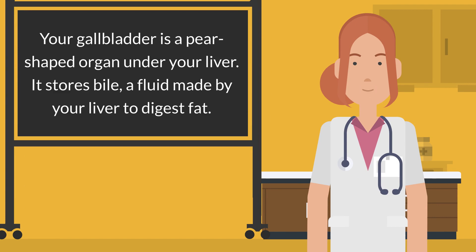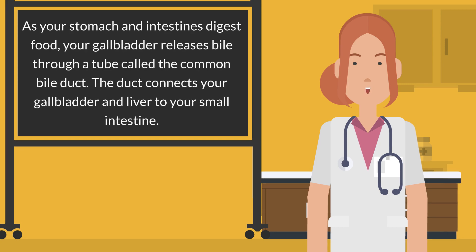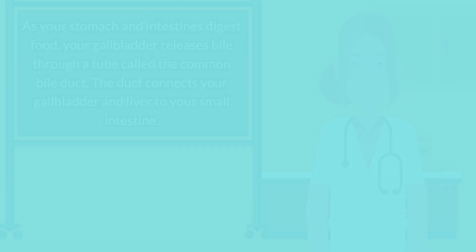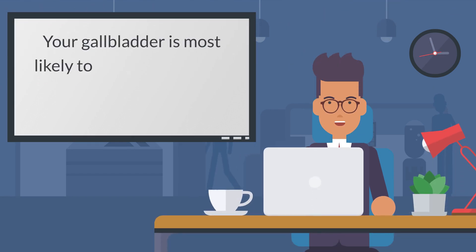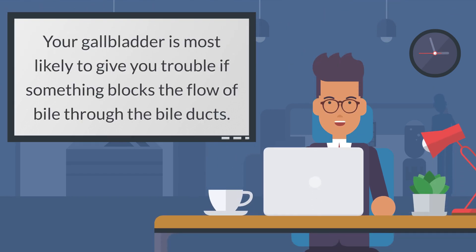Your gallbladder is a pear-shaped organ under your liver. It stores bile, a fluid made by your liver to digest fat. As your stomach and intestines digest food, your gallbladder releases bile through a tube called the common bile duct. The duct connects your gallbladder and liver to your small intestine.